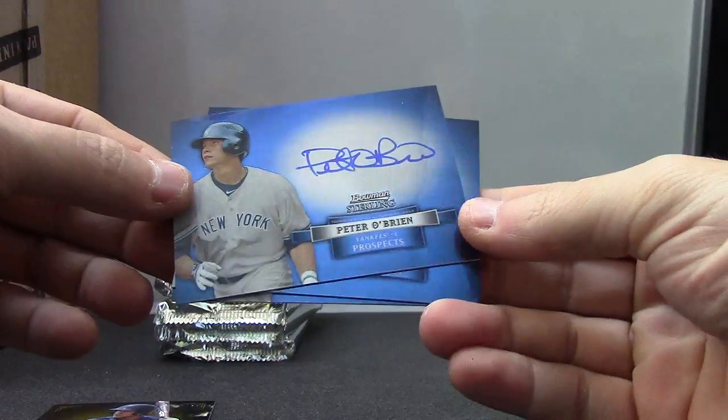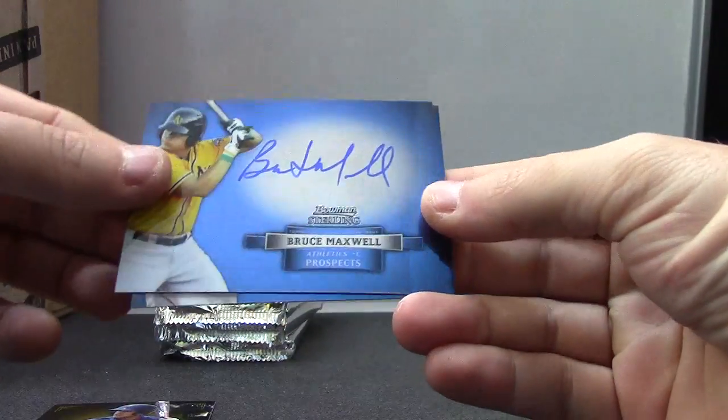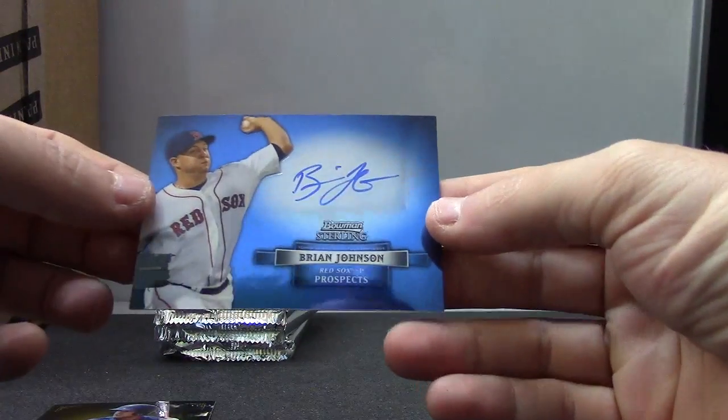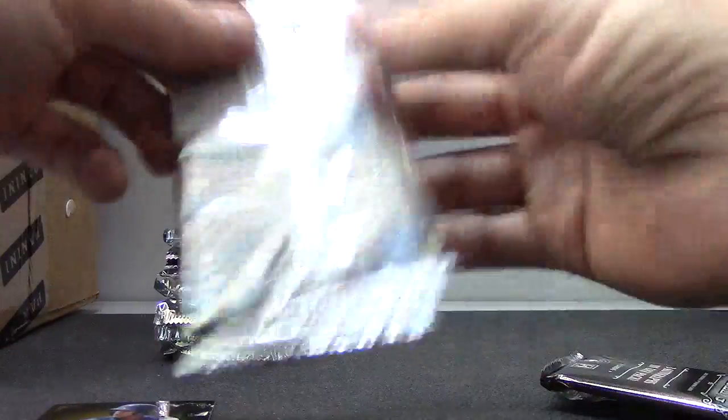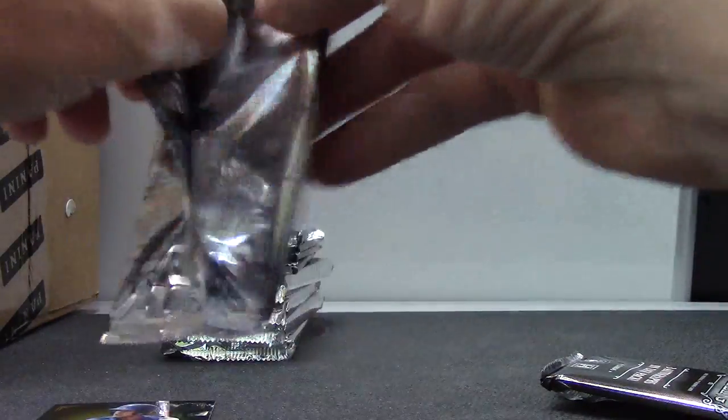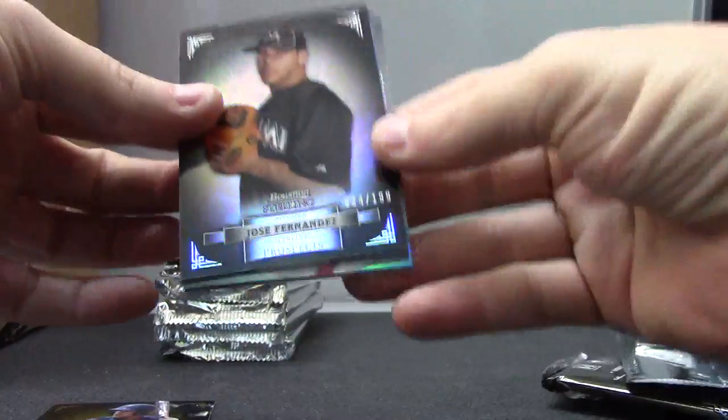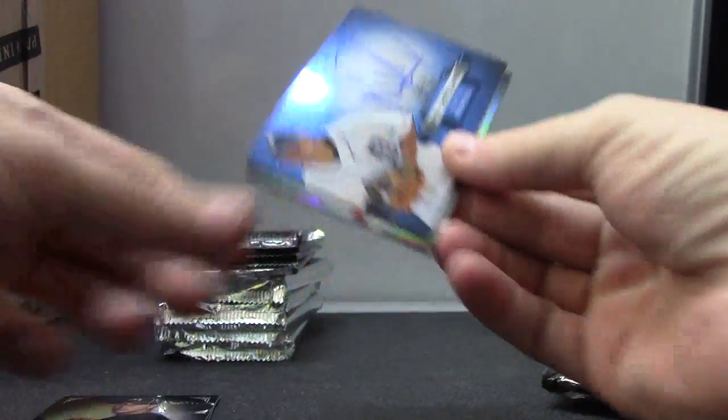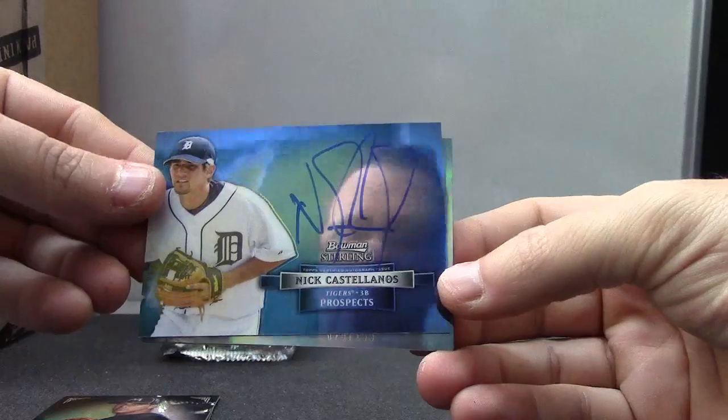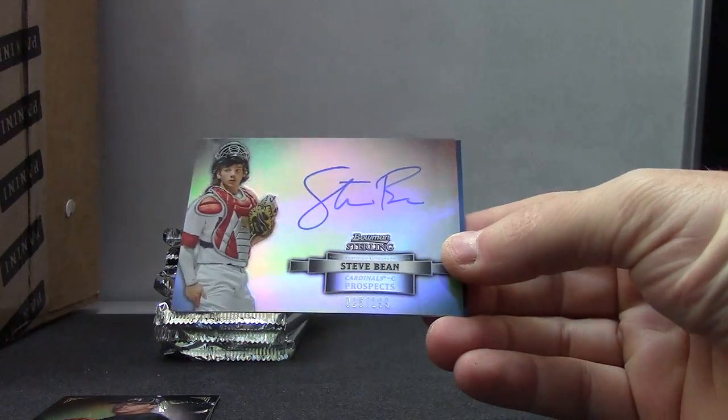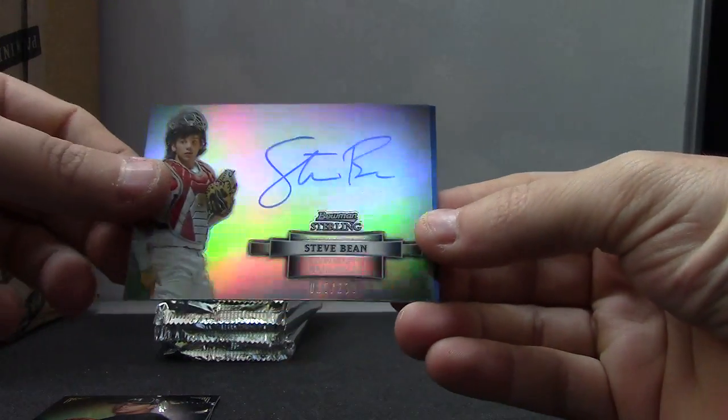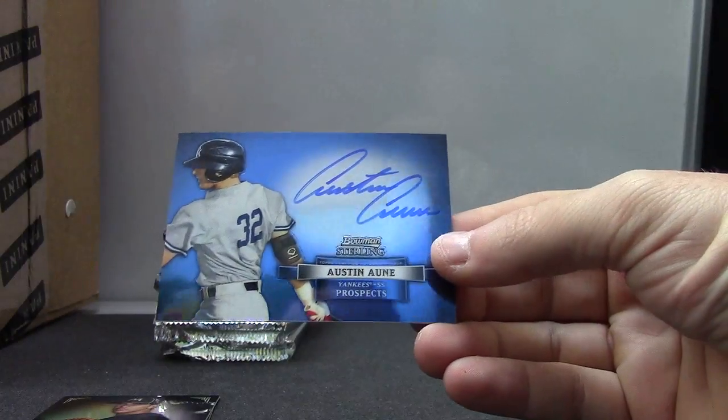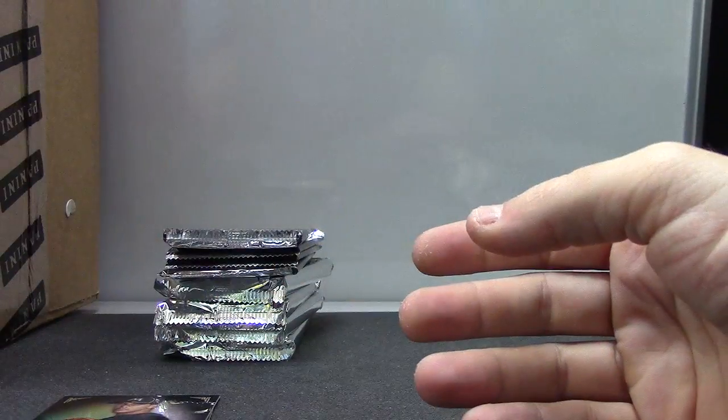Travis Shaw number 250, Peter O'Brien, Bruce Maxwell, the pig, Brian Johnson. Jose Fernandez 199 black, Nick Castellanos 199. Steve Bean Austin autograph.